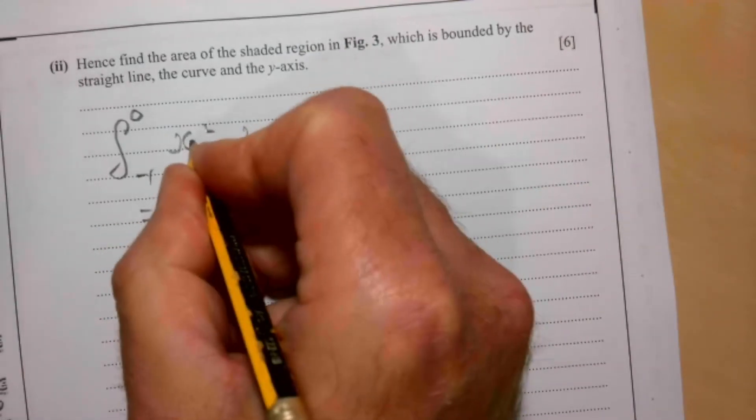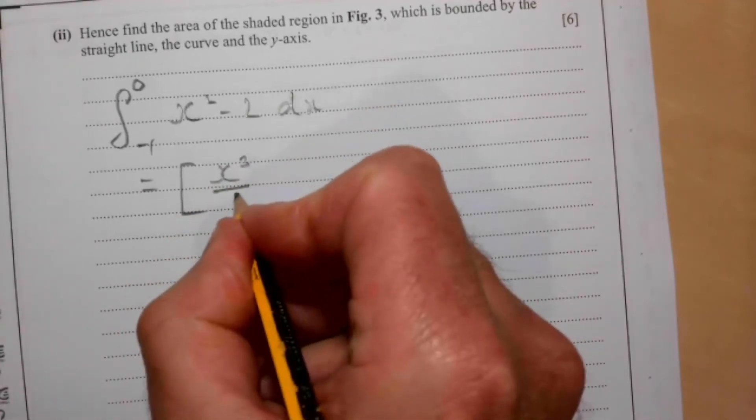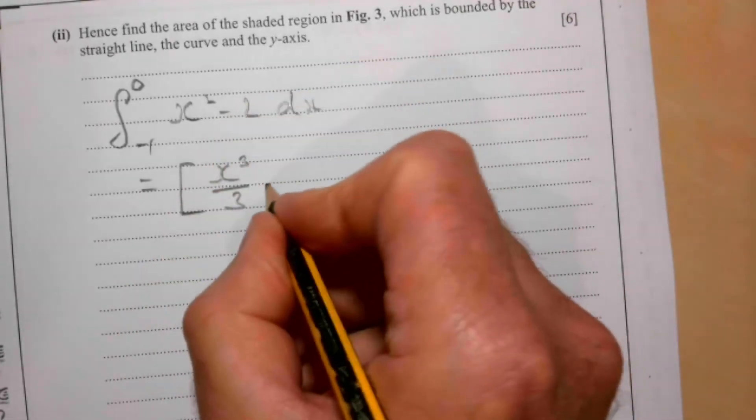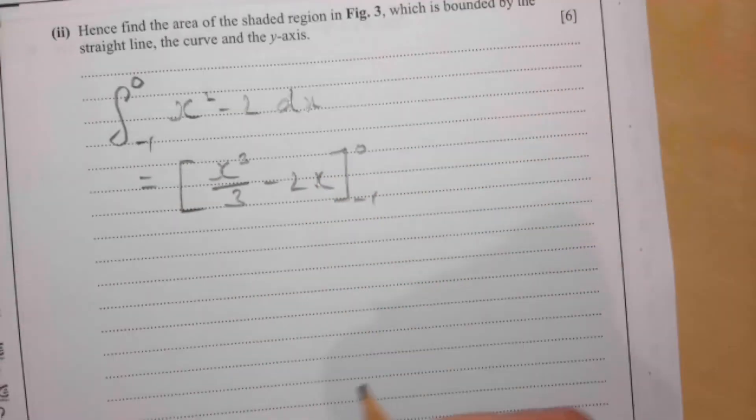That gives us, add 1 to the power, divide by the new power, so we get x cubed over 3, and then minus 2x, and that's between 0 and minus 1.